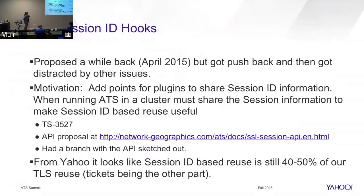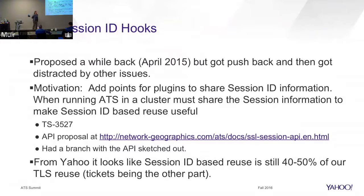A while back, a couple of years ago, I proposed an API that would add hooks in ATS for processing session IDs, providing an opportunity to plug in a communication scheme. When a new ticket showed up, you could send the information via whatever communication scheme you chose. I made a proof-of-concept branch with docs, got some pushback, and then the next fire came up and I didn't get back to it — our existing scheme was working well enough. It's not working so great now, so hopefully we'll get back to that.